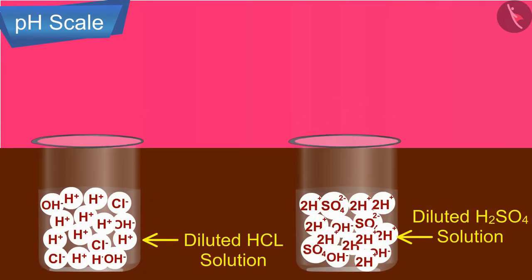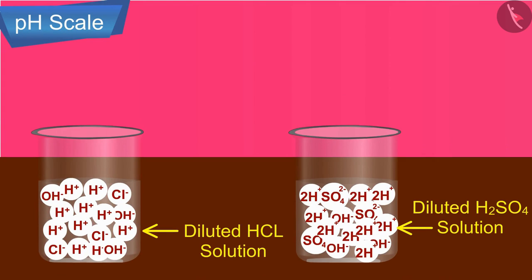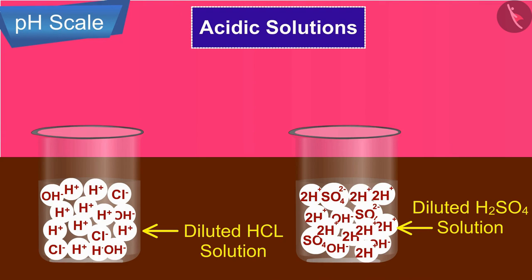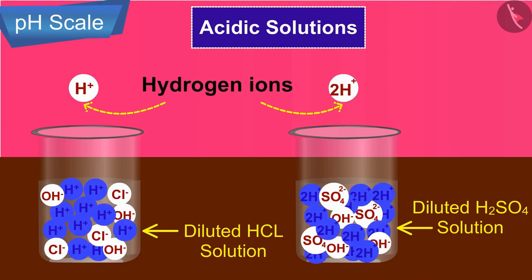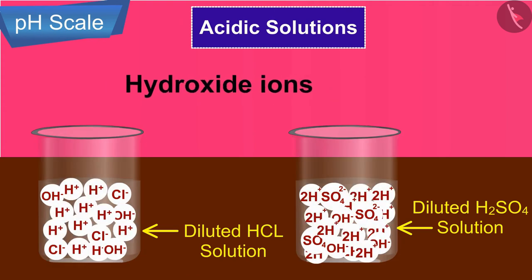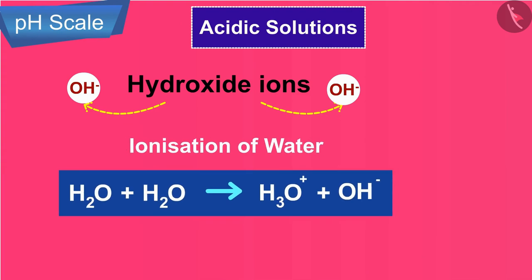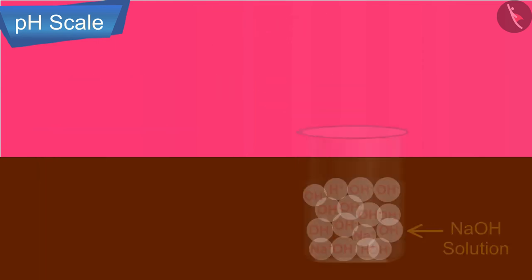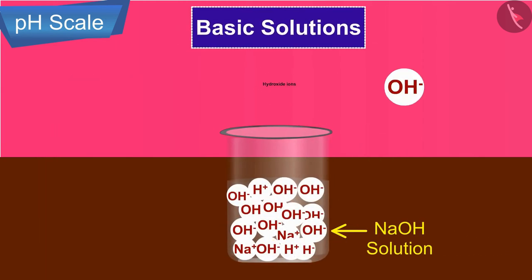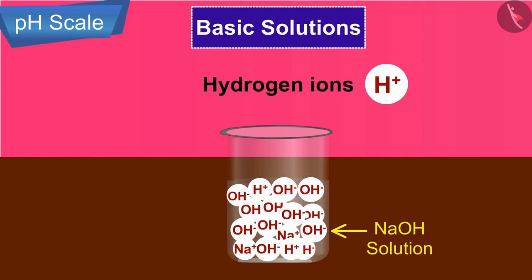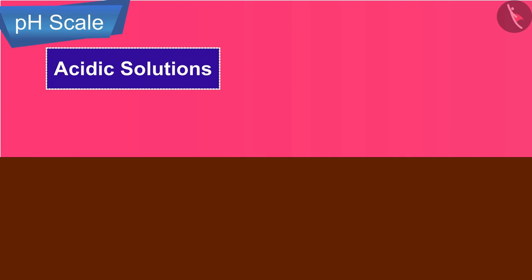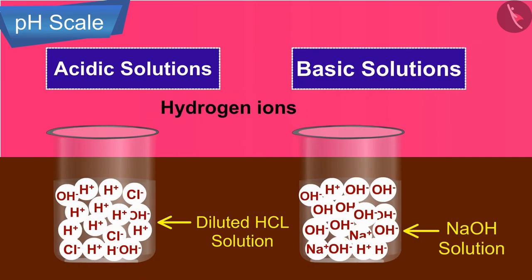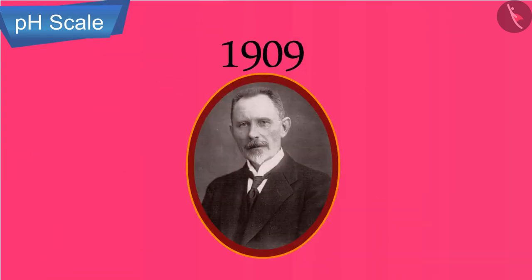Acidic solutions have an excess of hydrogen ions. Even acidic solutions contain hydroxide ions, which come from the ionization of water, but their concentration is very low. Similarly, basic solutions have an excess of hydroxide ions, but they also contain hydrogen ions in very low concentration. So both acidic and basic solutions contain hydrogen ions.